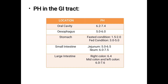pH in the GI tract. Oral cavity: pH 6.2 to 7.4. Esophagus: pH 5 to 6. Stomach: pH 1.5 to 2 in fasted condition and 3 to 5 in fed condition. Small intestine: pH in jejunum 5 to 6.5 and in ileum 6 to 7.5. Large intestine: pH in right colon 6.4, and mid colon and left colon 6 to 7.6.